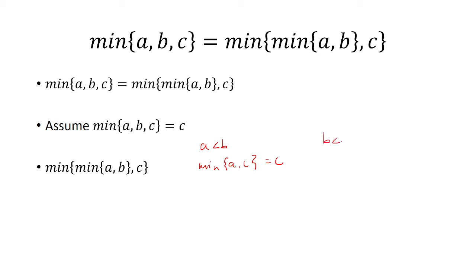If b is less than a, we'll have the minimum of b and c, which still, that's going to be c. So it doesn't really matter which one it is. So this turns into c, which is the minimum of a, b, and c. And so that completes the proof.